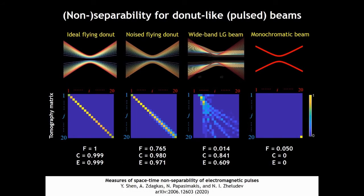Here are the results for an ideal flying donut and a flying donut with noise and the wideband LG beam and monochromatic LG beam. The perfect flying donut is set as the ideal case. So the fidelity is 1.